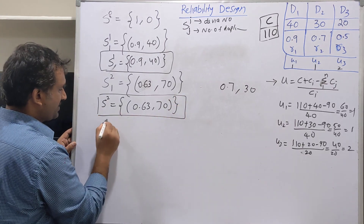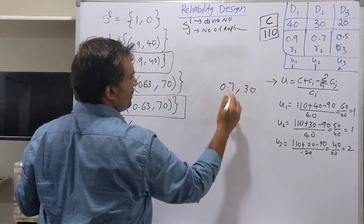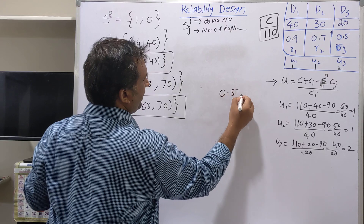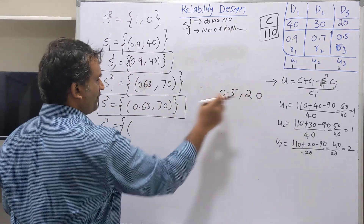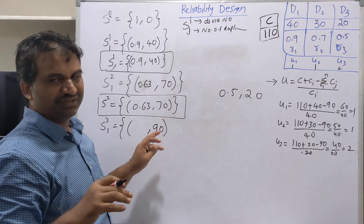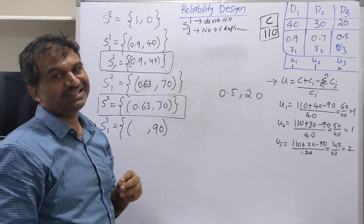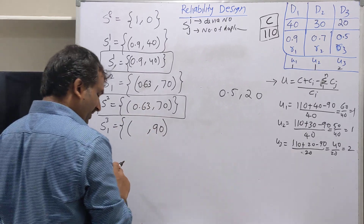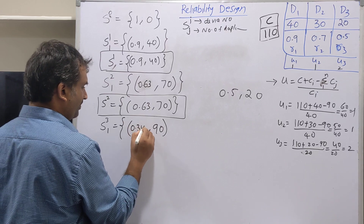In the third stage, for device 3 with one copy: reliability is 0.5 and cost is 20. Adding to previous: cost = 20 + 70 = 90. It is recommended to write the cost first — if the cost exceeds the budget, we don't need to calculate reliability. Reliability = 0.5 × 0.63 = 0.315. So S3,1 gives (0.315, 90).